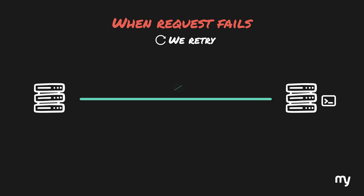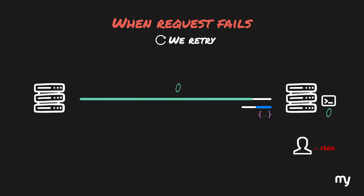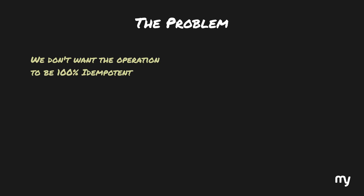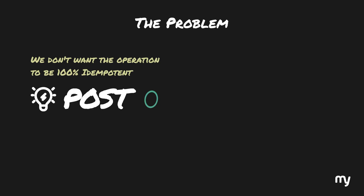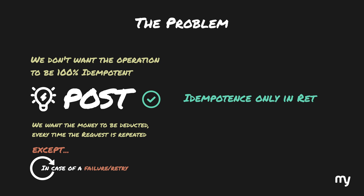But there can also be a tricky situation: the connection was established, the operation succeeded at the target server, but there was a problem returning the response. The $200 were deducted for the purchase, but we got a response that the request failed. Since for us the request failed, we retry the operation, and $200 will be deducted again for the same purchase — a very bad experience for the customer. We don't want the operation to be 100% idempotent, so POST was probably the right choice because we want money deducted every time the request is repeated. But we don't want this behavior during a failure or retry. Normally we don't want idempotency, but we want it in the specific scenario of a retry.